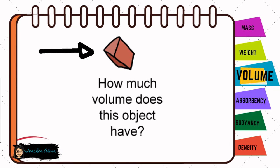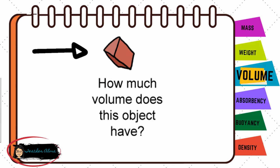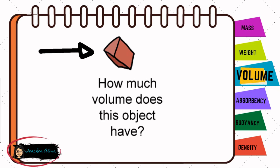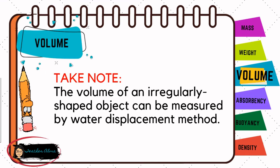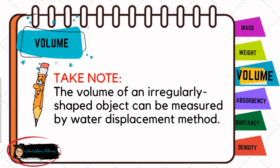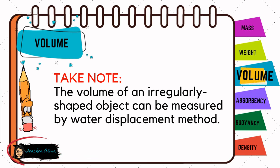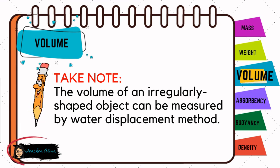Now, let us say that we would like to find out how much volume this object has. Take note that this object is an irregularly shaped object. Instead of calculating the volume using a formula, we can make use of the fact that two objects cannot be in the same place at the same time. The volume of an irregularly shaped object can be measured by the water displacement method.